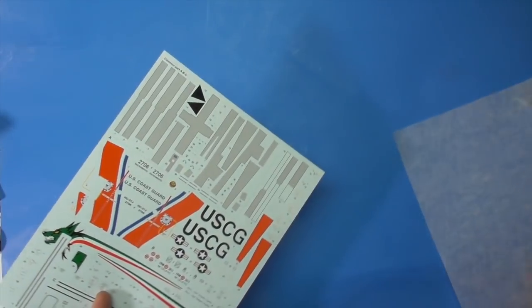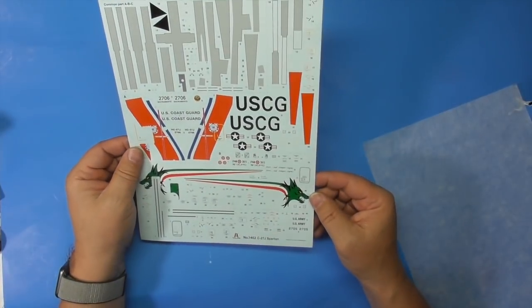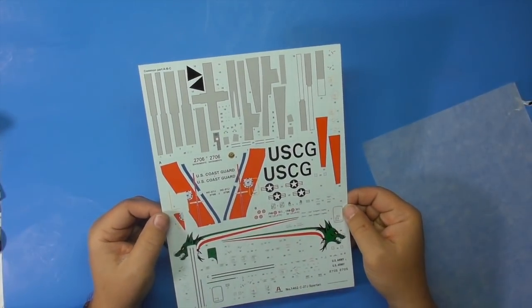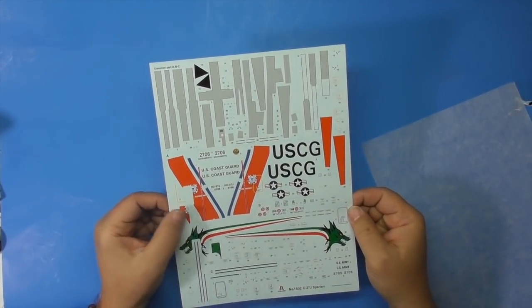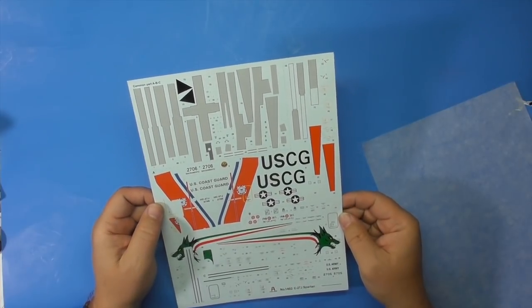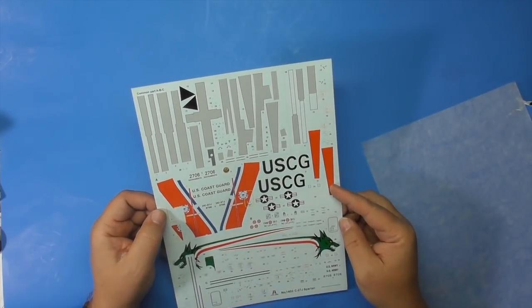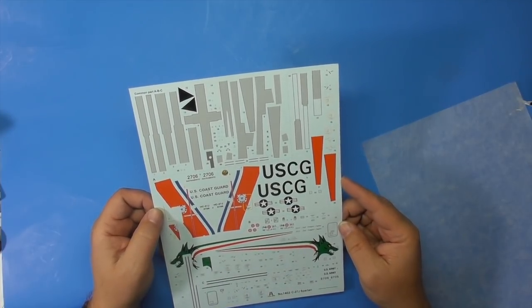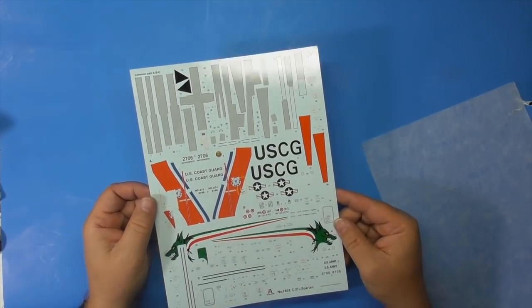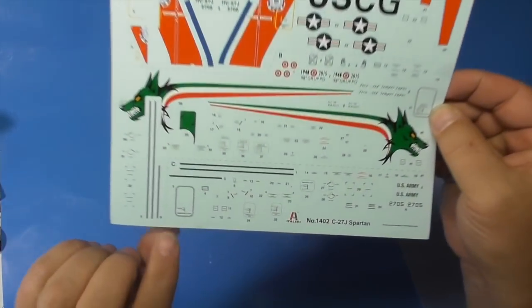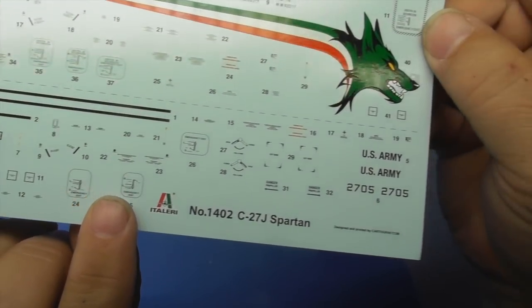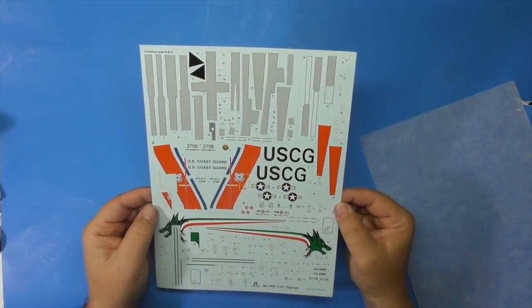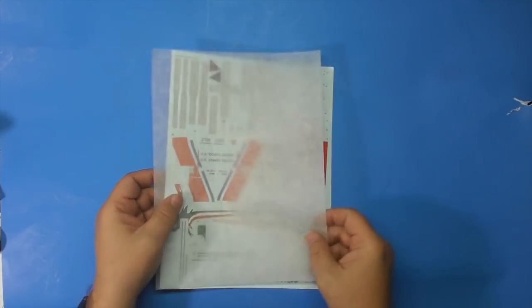Cartograph printed decals, designed by and printed by Cartograph. They're beautiful. The color's amazing. I'll have to check my references, it might be a little too red for the Coast Guard or it might be spot on. But you know, these stencils for the door, all these stencils look great. The wolf's head looks great, the walkways. It's Cartograph, enough said.